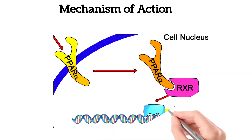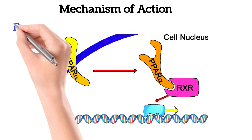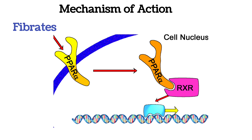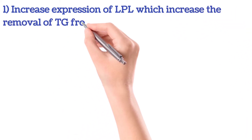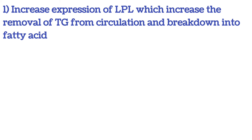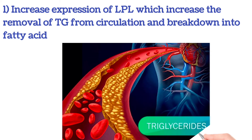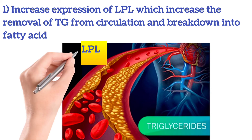Mechanism of action of fibrates: a diagram represents a clear concept of the mechanism of action and location of PPAR-alpha. PPAR-alpha, shown in yellow, is present on the nuclear membrane, shown in blue. When fibrates bind to PPAR-alpha, they inhibit or activate certain chain reactions involved in lipid metabolism, increasing or decreasing different gene expressions. It increases expression of LPL (lipoprotein lipase), which increases the removal of triglycerides from circulation and their breakdown into fatty acids. LPL is present on the endothelial lining of arteries and vascular surfaces.